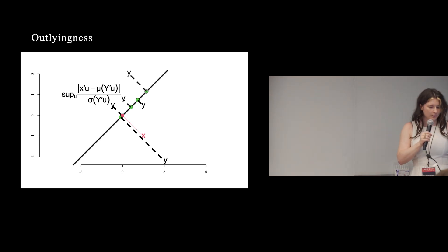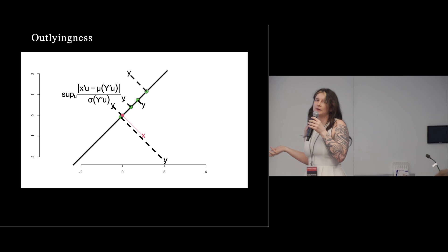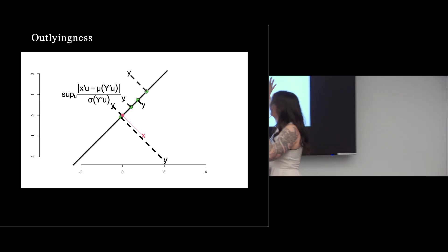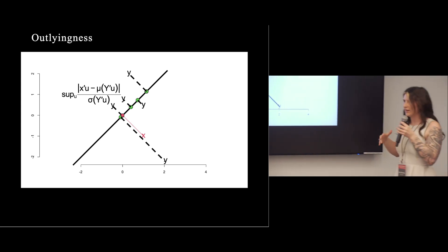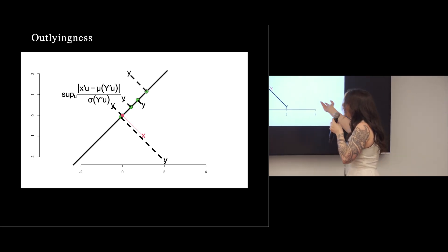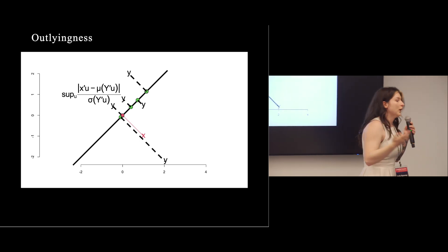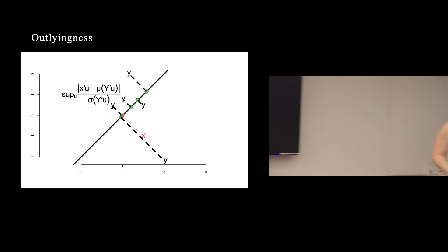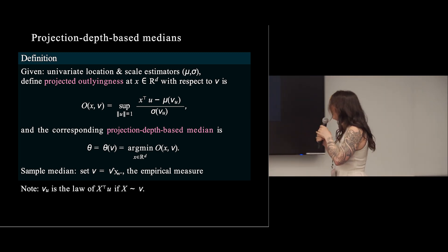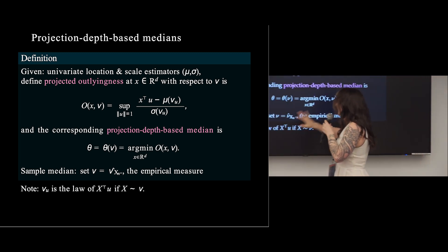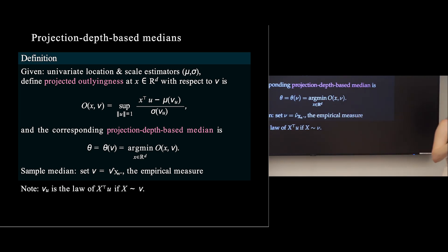The projection depth-based median is simply the least outlying point — the minimizer of this outlyingness function. It is actually a whole class of medians because you can substitute any univariate location estimator μ and scale estimator σ that you want.